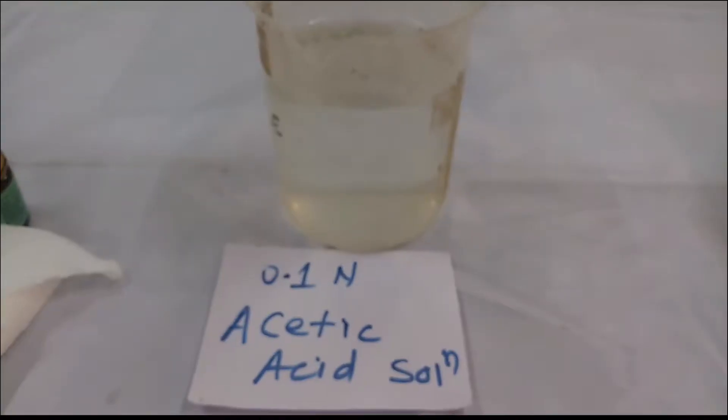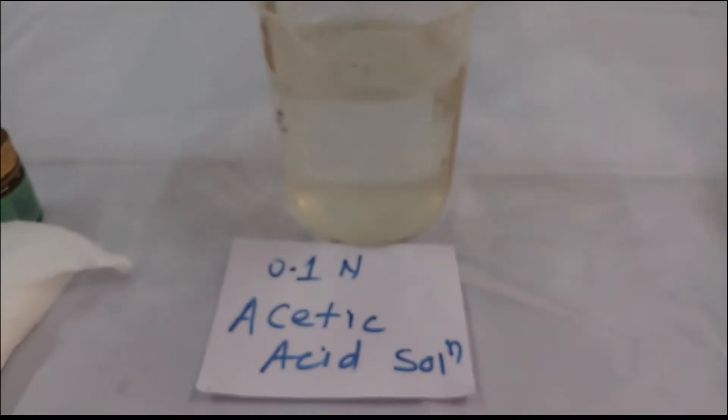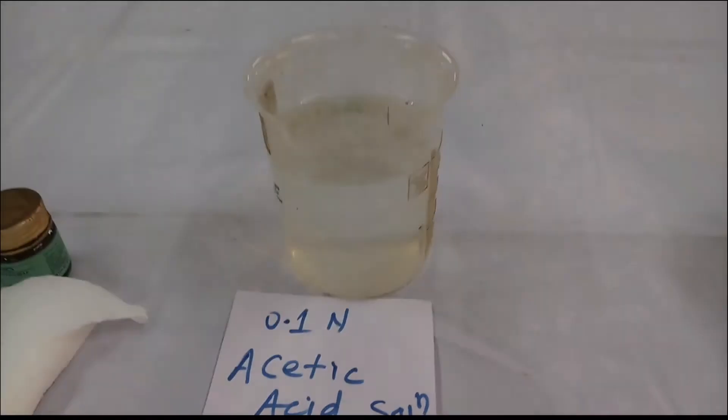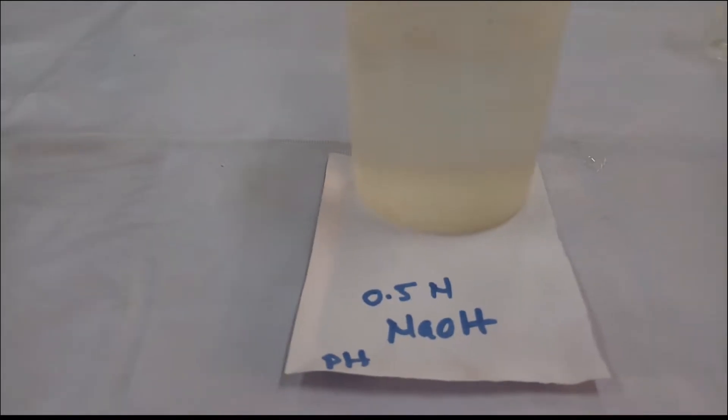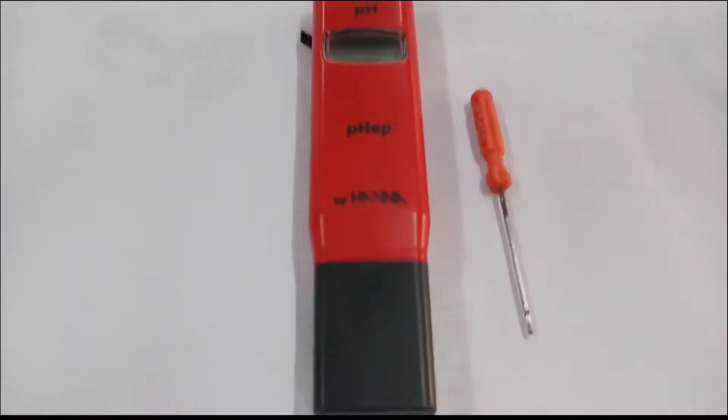Tissue paper, 0.1 normal acetic acid, 0.5 normal NaOH which will be taken in the burette, pH meter.